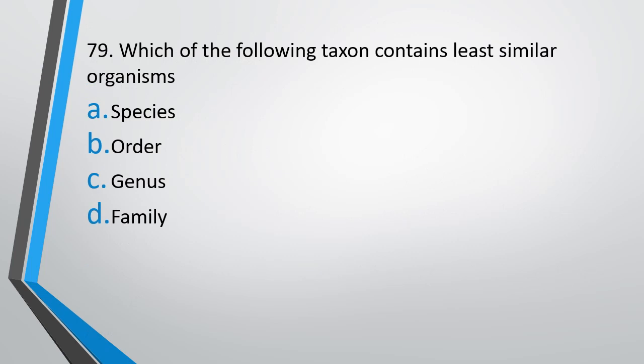Question number 79: Which of the following taxons contains the least similar organisms? — Species, order, genus, or family. Out of these four options, which taxon contains organisms with the least similarity? The correct answer is option B — order.